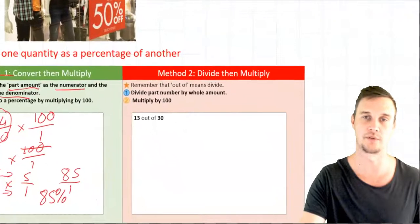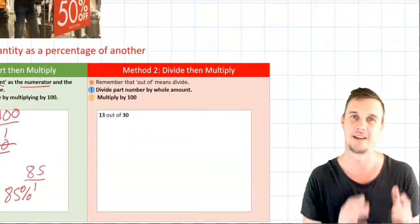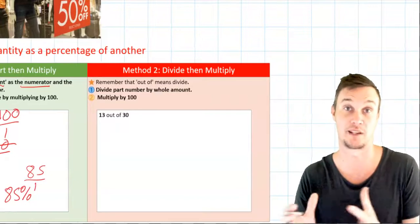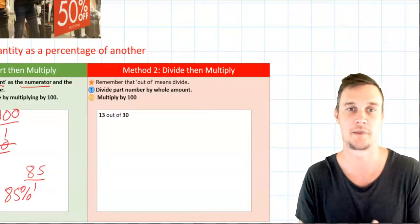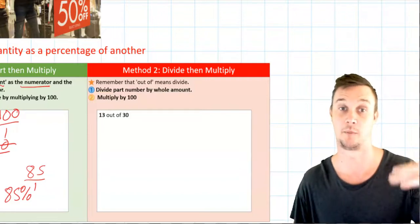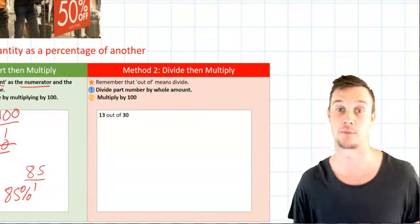Alternatively we can do what we call the divide and then multiply. It's important to remember that out of sort of means divide when we looked at fractions previously. And the two steps that we do are you divide the part number by the whole number and then simply multiply it by 100.